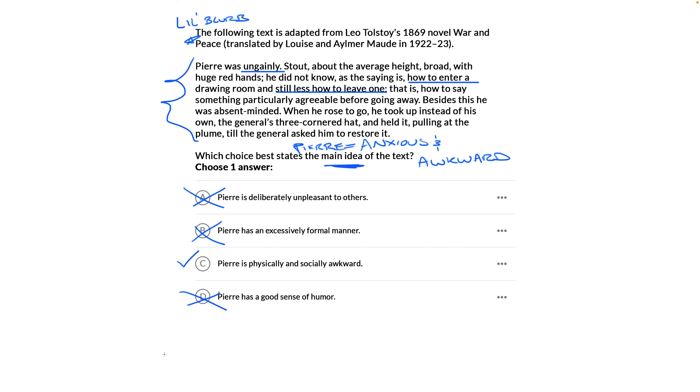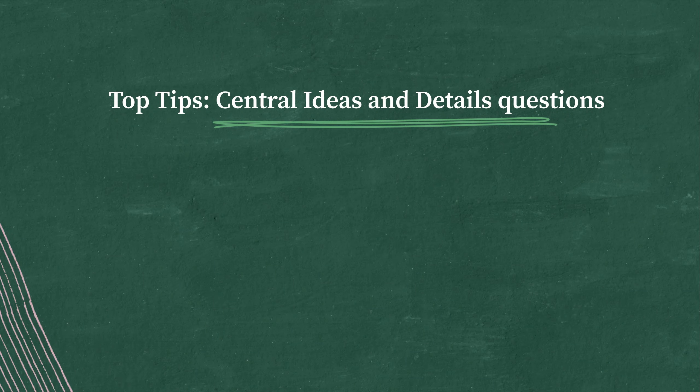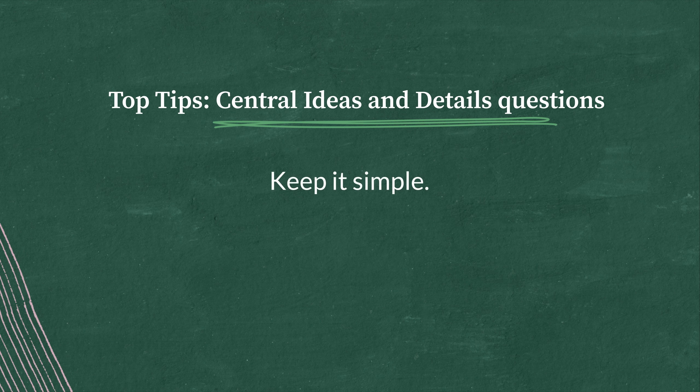So let's talk through some top tips for approaching this question type. Keep it simple. Whatever your summary is, see if you can get it down to a few words, because that's what the choices look like, a few words or a short sentence. And keep it specific. Any choice that either gets too broad or too narrow won't be a main idea. Keep yourself focused on what the text actually says, not what it might say if it were a little bit longer.